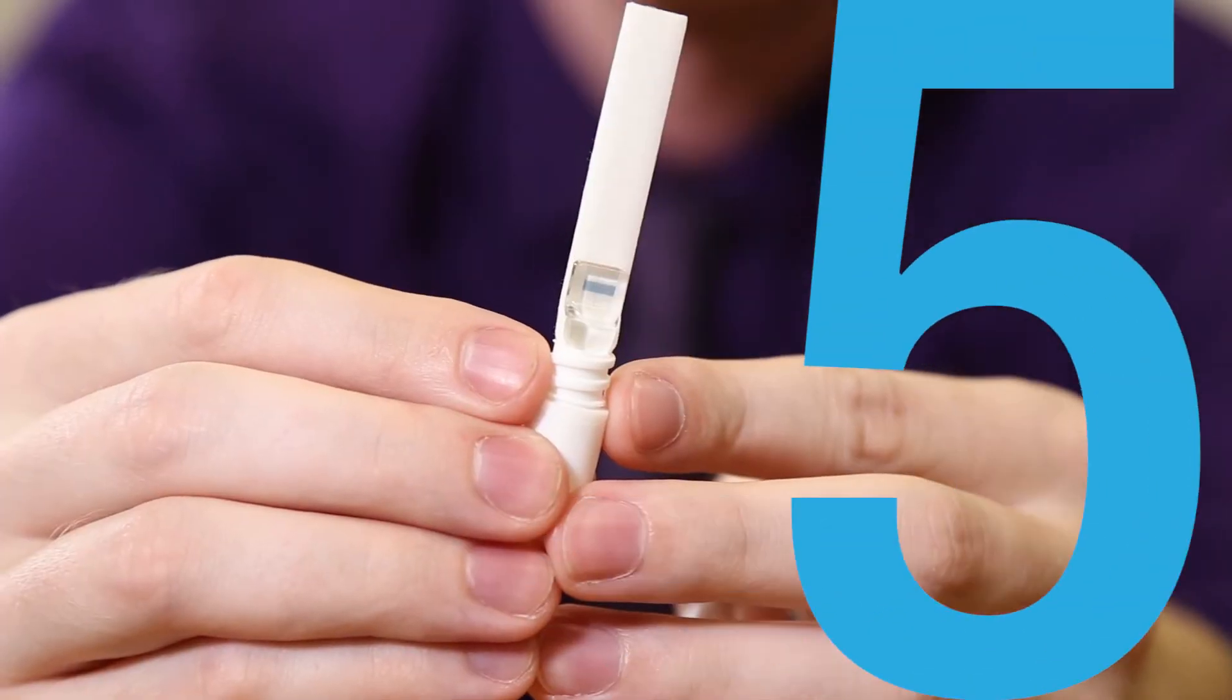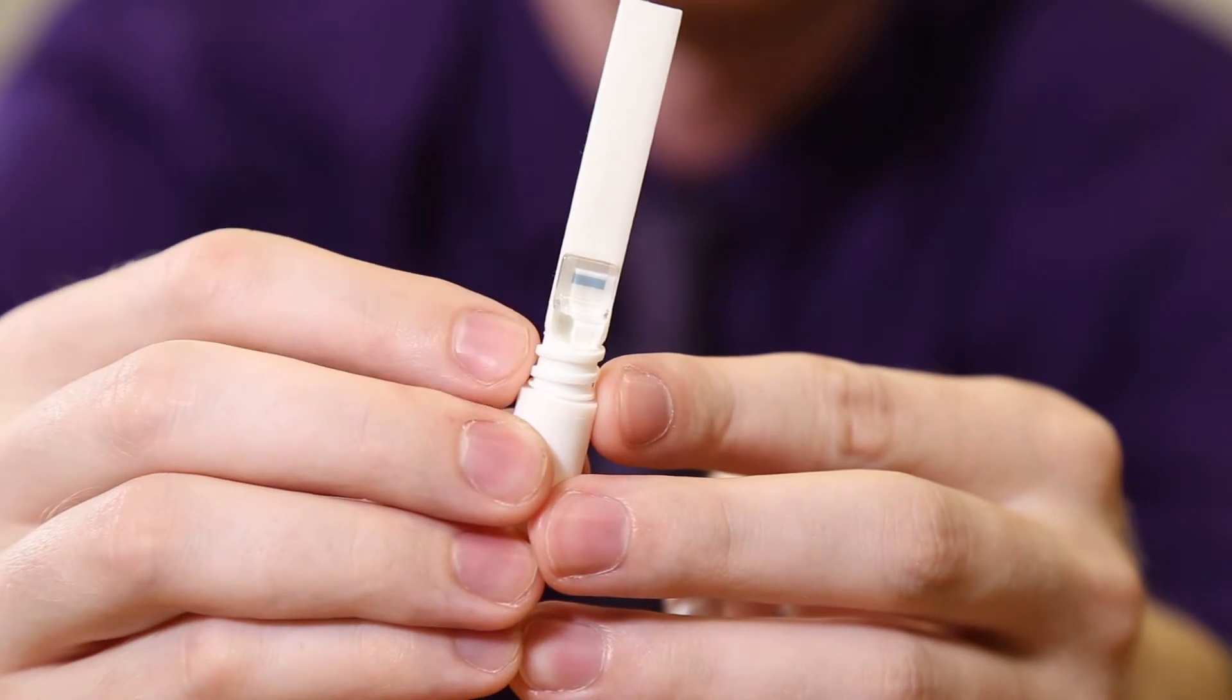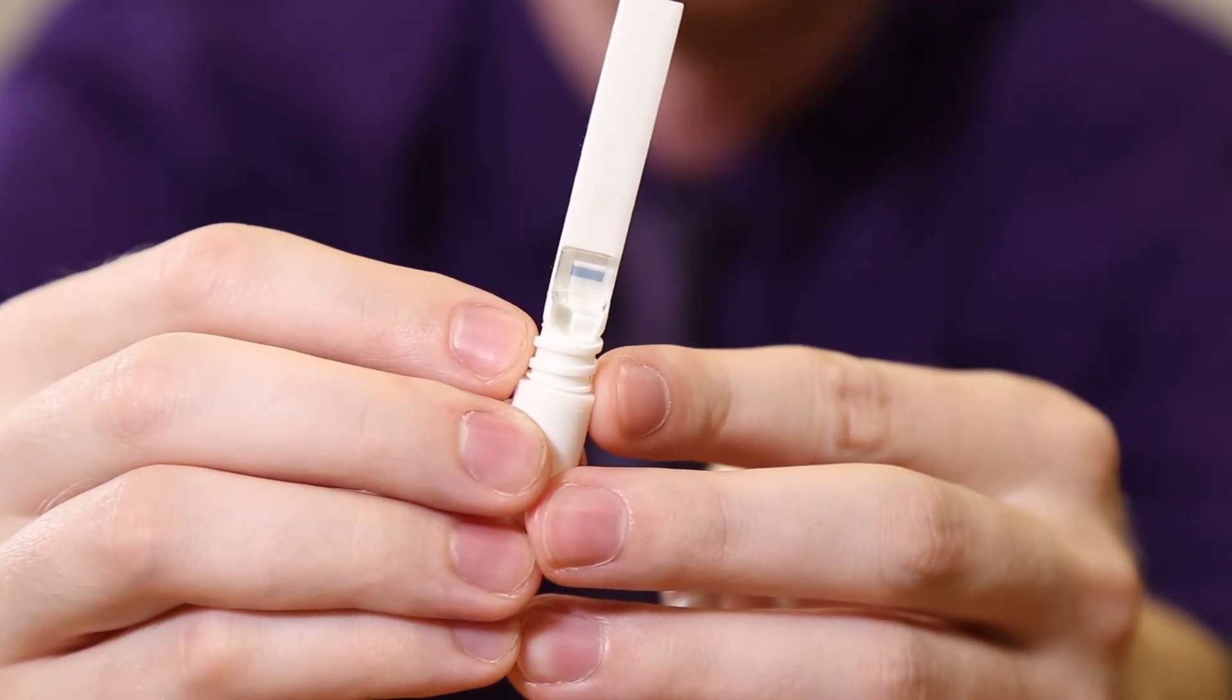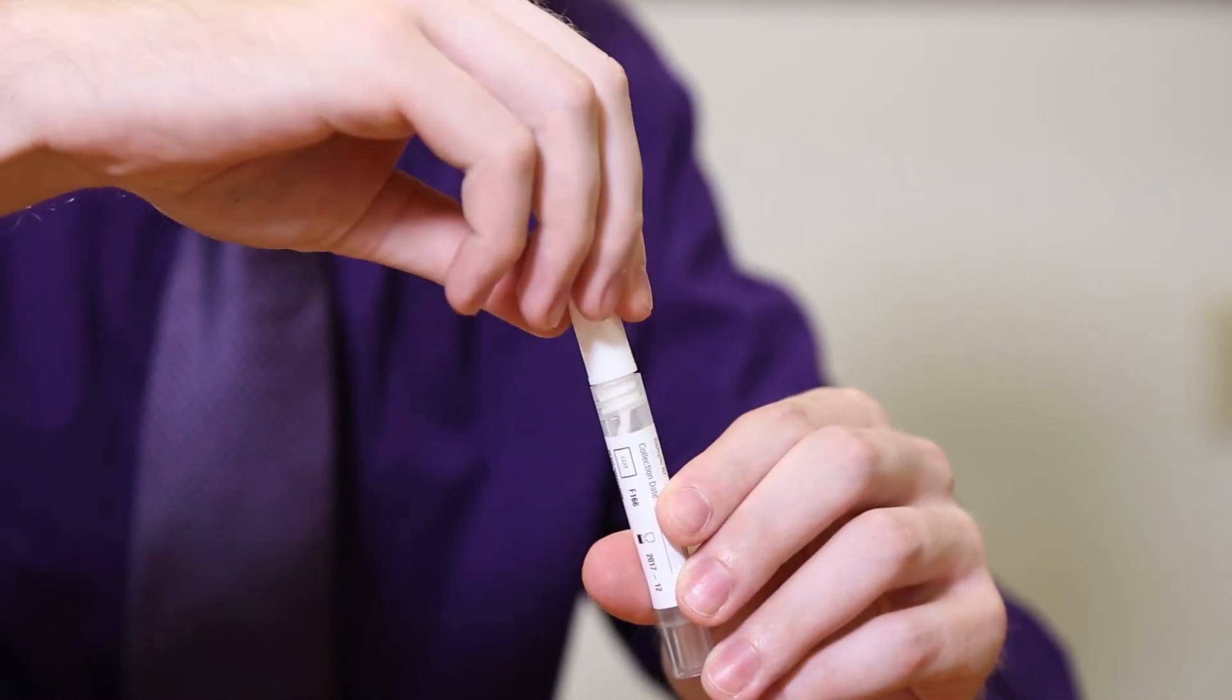Step 5: Once the SVAI forms a distinct blue line across the clear plastic window, instruct the donor to remove the collection pad from their mouth. The collection pad should then be inserted into the buffer tube. The donor should twist the white handle tightly into the buffer tube to secure.